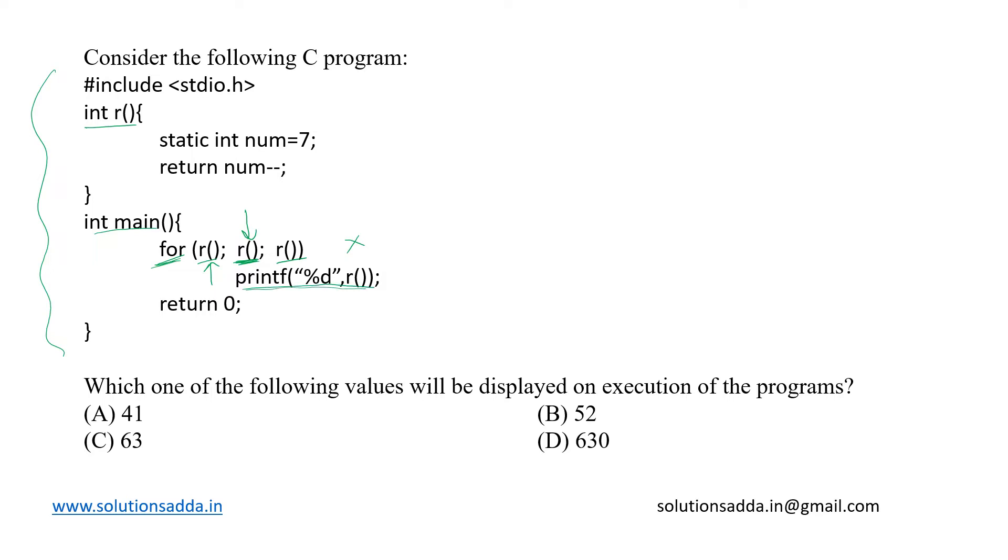After that we do the increment or decrement operation and then we enter the second iteration in which we will again check this condition. If it is satisfied we will go to the print statement and this cycle continues.